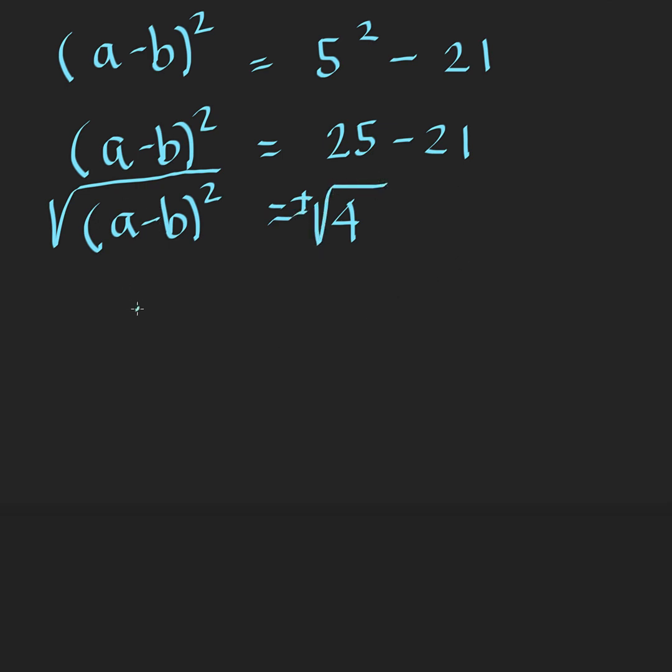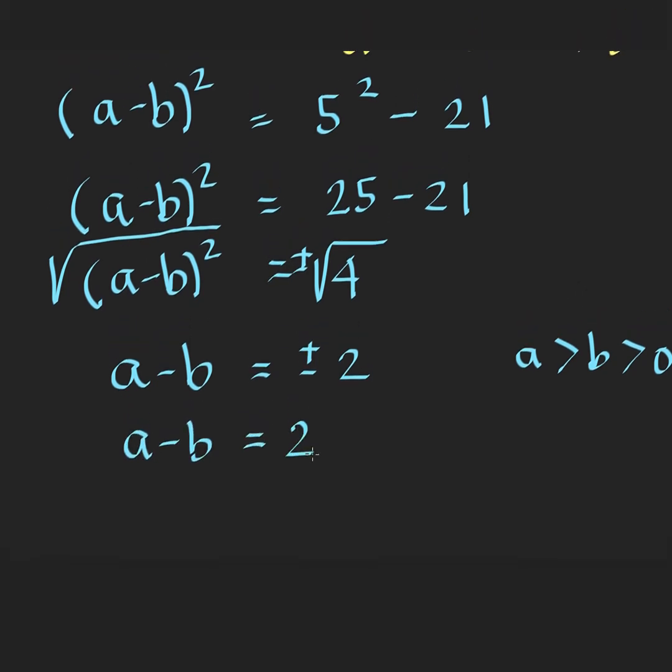And this gives us A minus B is equal to plus or minus 2. But notice that at the start, we said that A is greater than B greater than 0. So that means we cannot take the minus 2, because A is greater than B, then their difference would be positive.